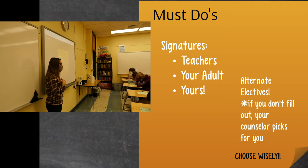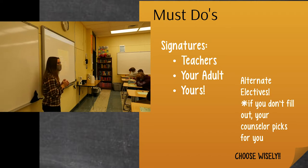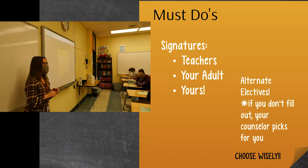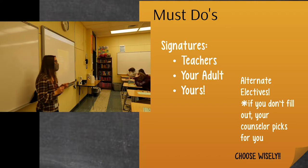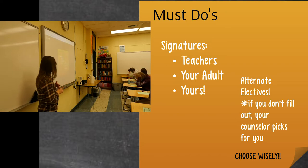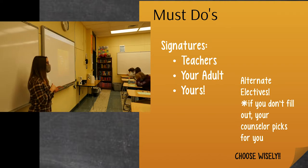Underneath the student signature box there are alternate elective spaces — these are super important and required on the sheet. If you don't fill out alternate electives and you don't get your first choice, electives will be chosen for you. The numbered spaces mean something: put your alternates in order of preference and we will try to pull from your number one choice. They also need signatures — if a class has a signature line next to it on the sheet, even as an alternate, you need a teacher's signature.